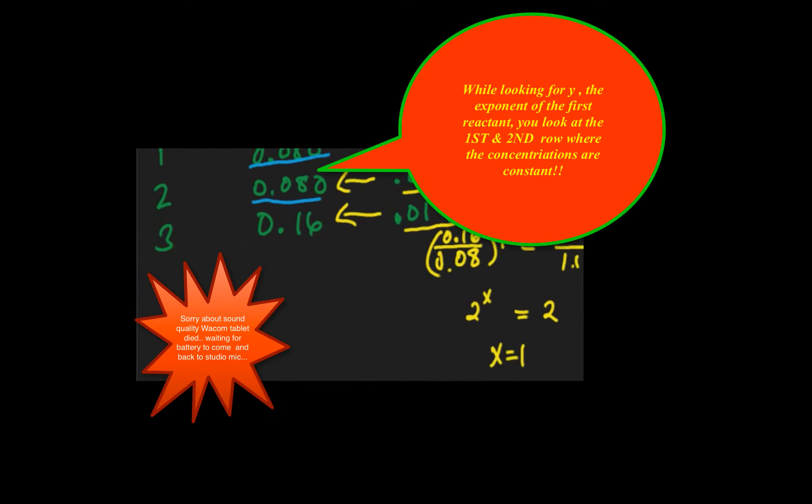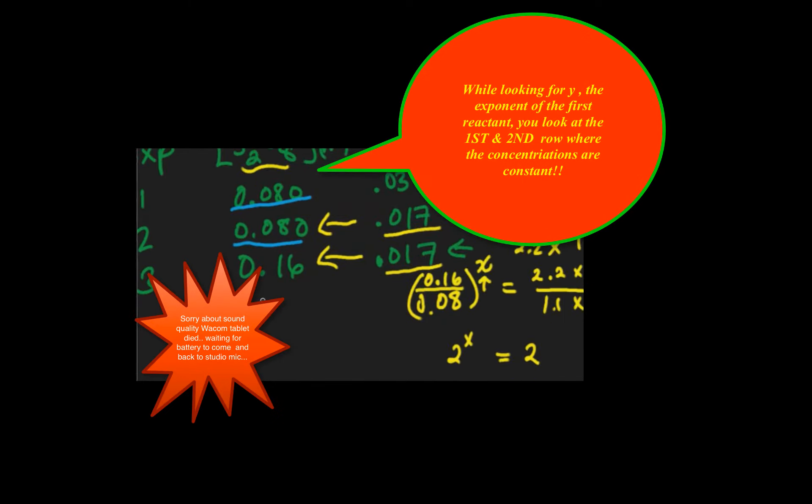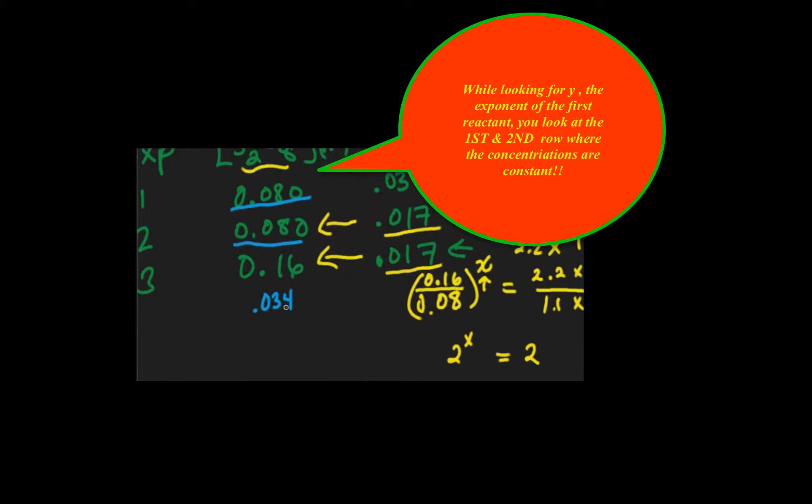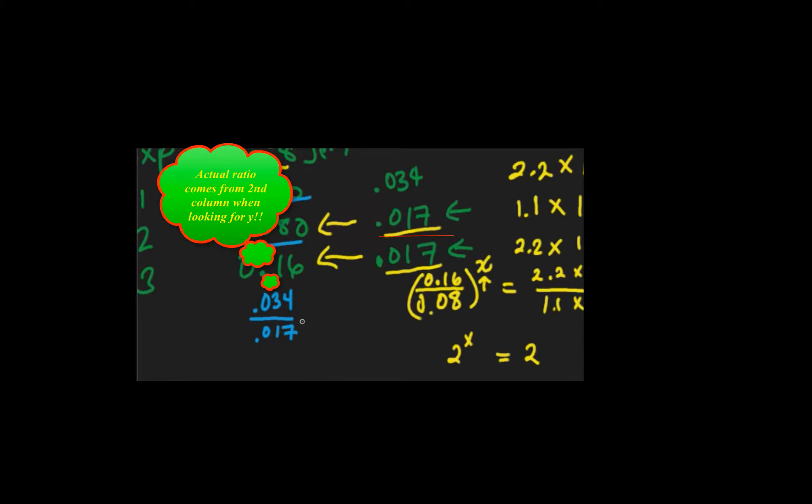So first reactant is constant here and here, they're both 0.08. So I do a ratio of the second two or the first two experiments, 0.034 over 0.017.